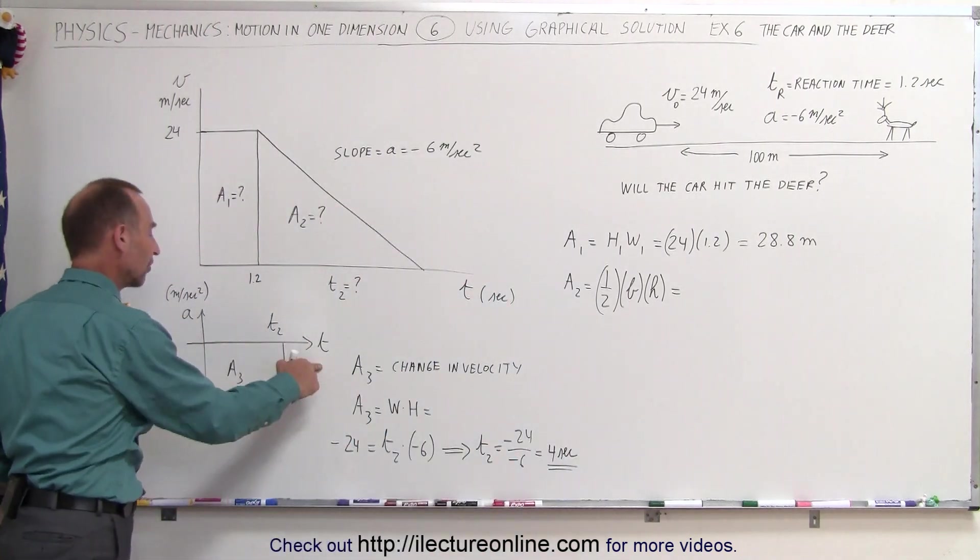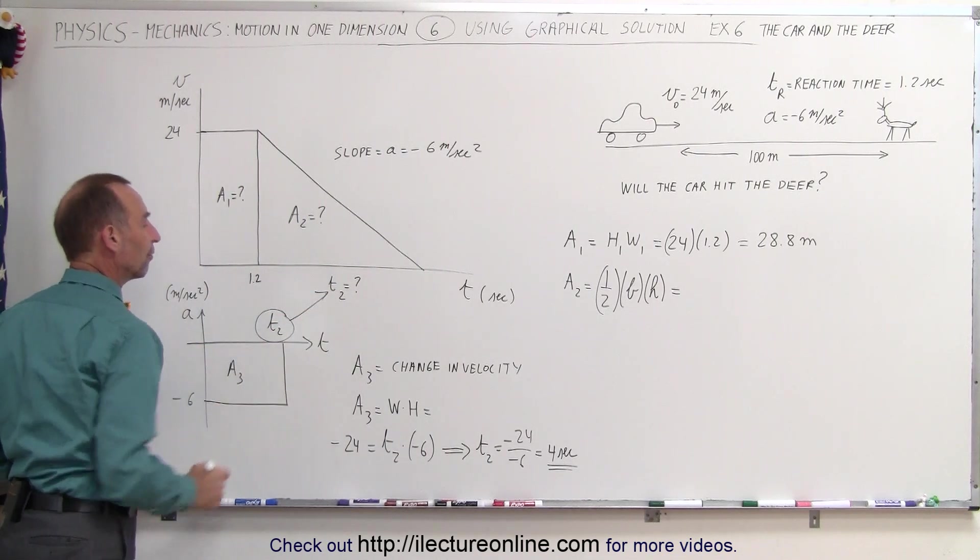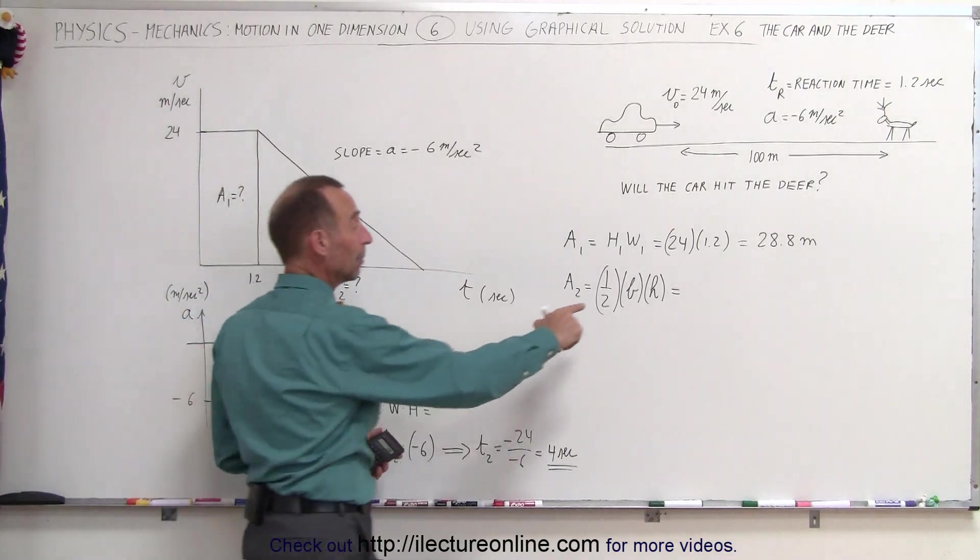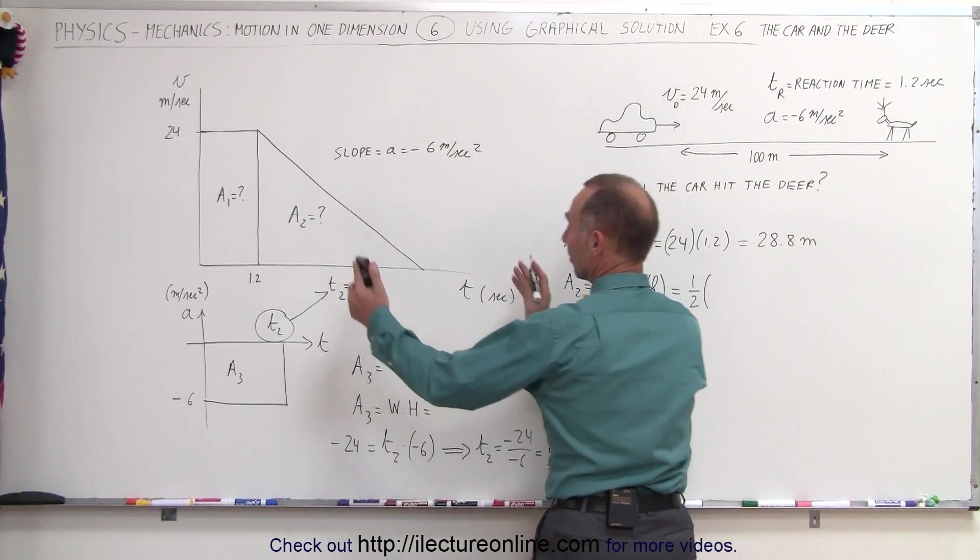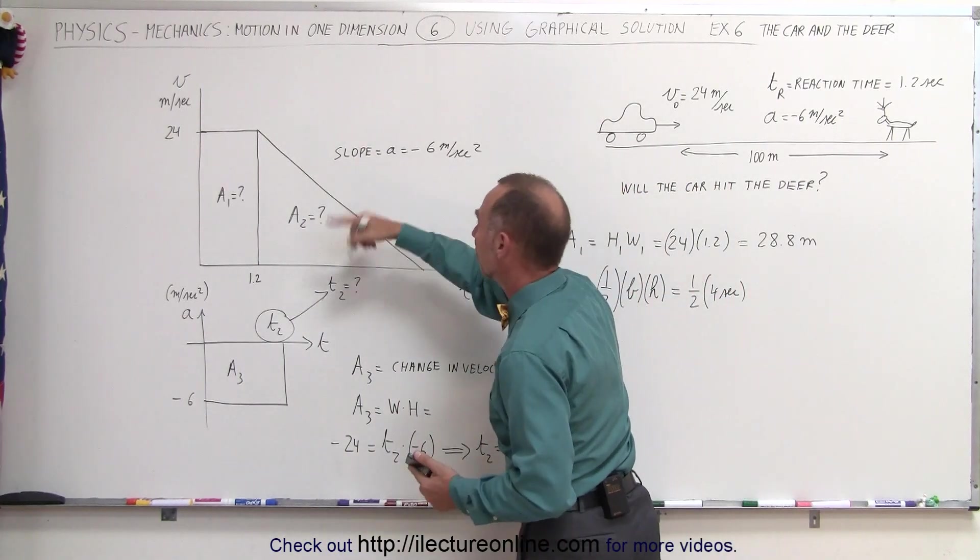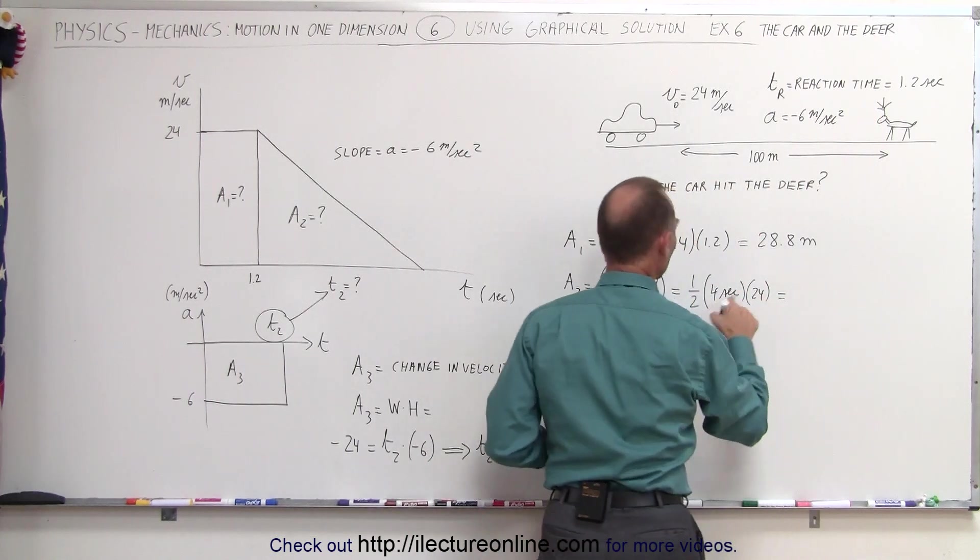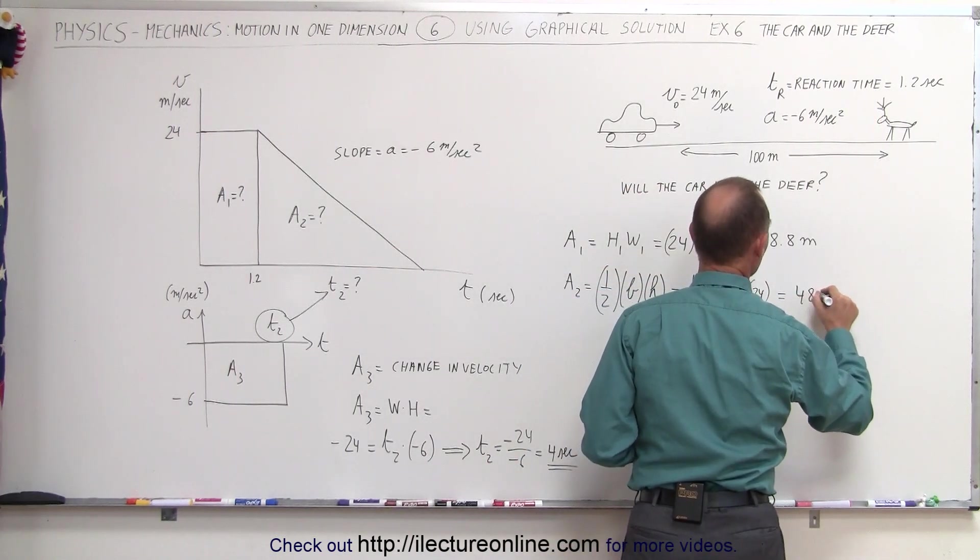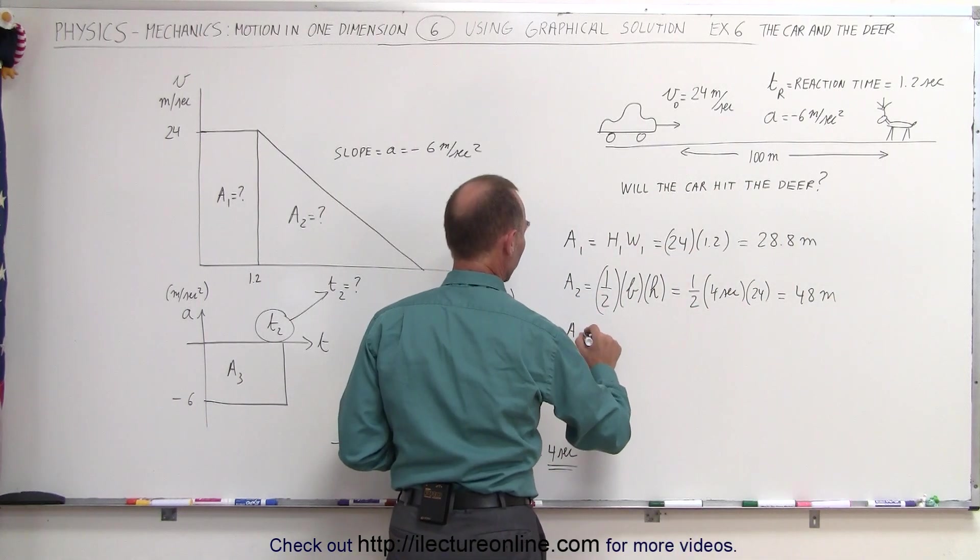By using an acceleration versus time graph, we were able to solve for t2. Now we can plug that into our first graph. That equals one-half times the base, which is 4 seconds, times the height of 24, which gives us 48 meters.